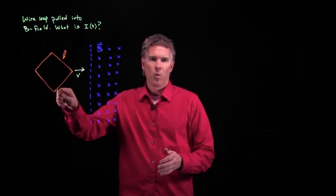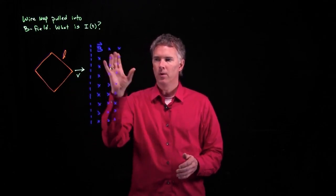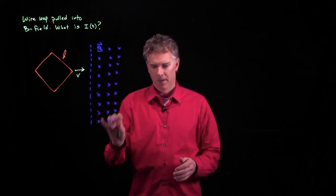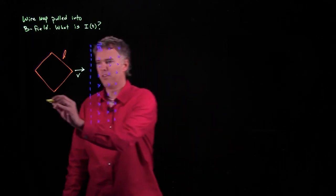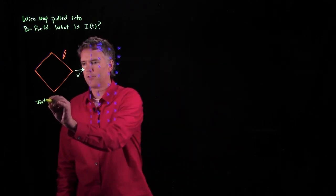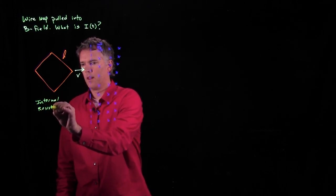Let's say we have a square metal loop and we're going to pull it into a region of B field. Now a square metal loop will have some internal resistance to it and let's call that internal resistance R.